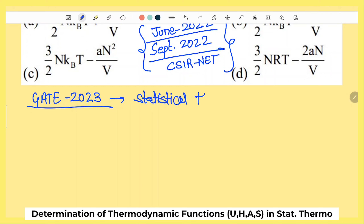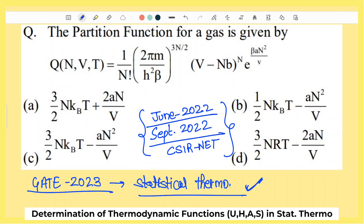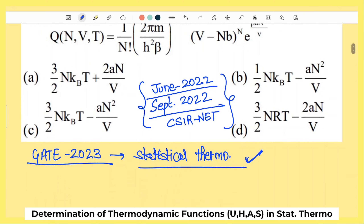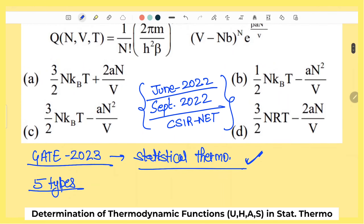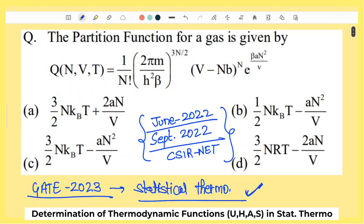GATE Chemistry 2023 का जो exam आने वाला है, उसमें statistical thermodynamics से यह question है। Statistical thermo से question GATE हर बार पूछता है। यह question CSIR Net और GATE दोनों के लिए बहुत important है। Statistical thermodynamics में basically पाँच type के important questions आते हैं, और यह उनमें से एक important type है।